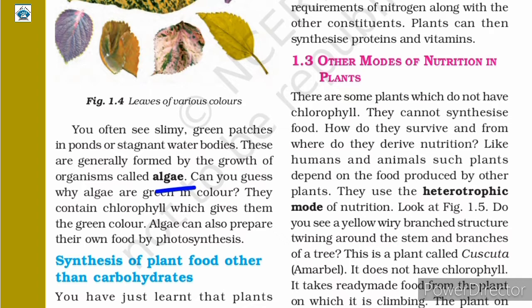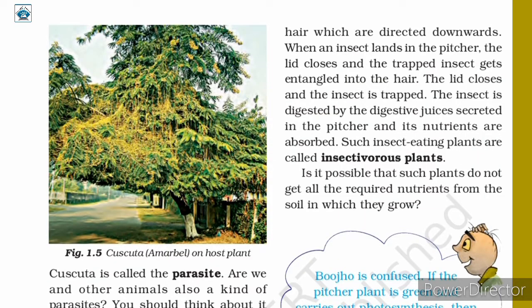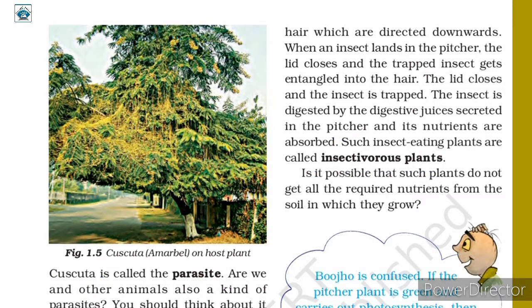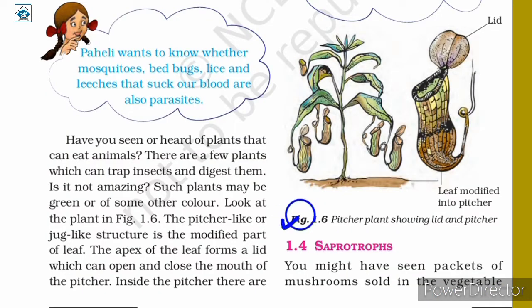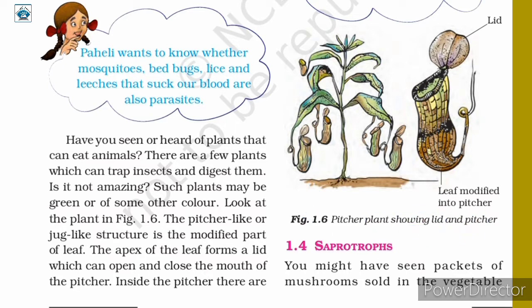Next, we discussed about algae — they are green in colour as they contain chlorophyll and can prepare their own food by photosynthesis. We learnt about cuscuta, which is a parasite with a heterotrophic mode of nutrition. We also learnt about insectivorous plants such as the pitcher plant, which eats insects and digests them to absorb nutrients.